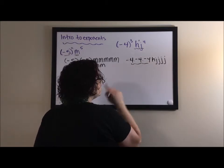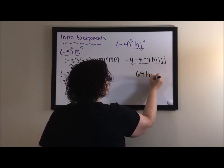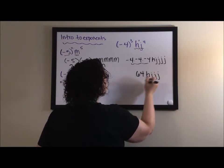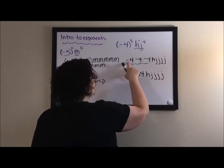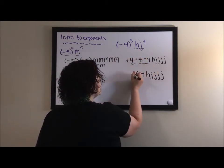Alright, so if I wanted to multiply those out, four times four times four is sixty-four. A negative times a negative is positive, but a positive times a negative is a negative.